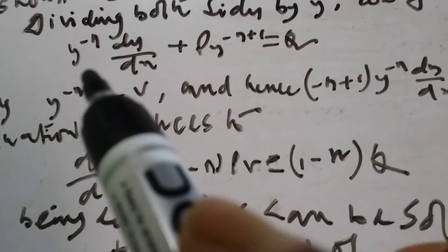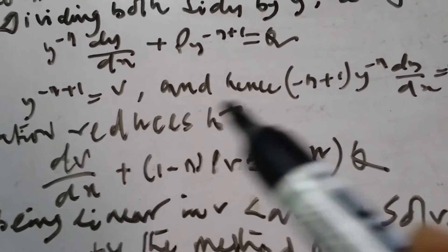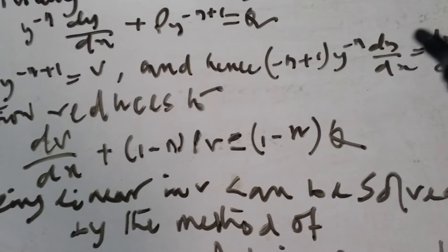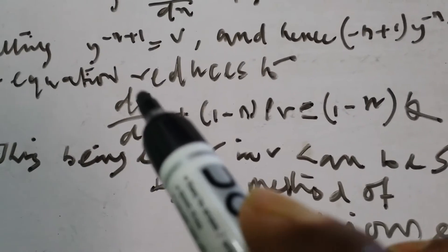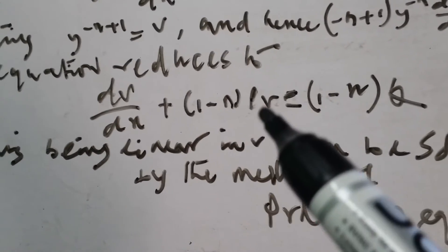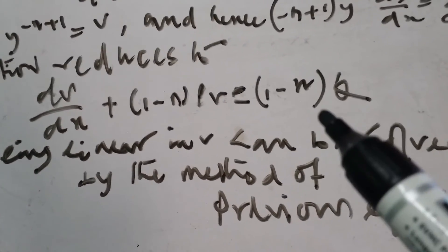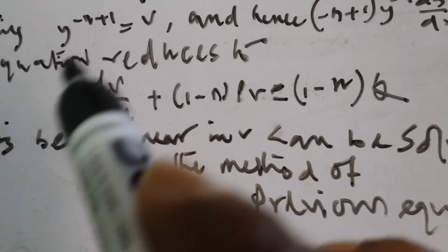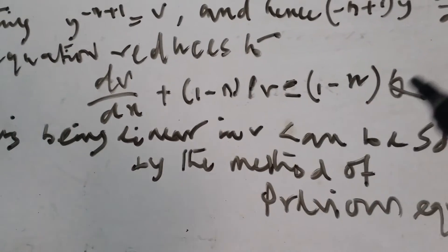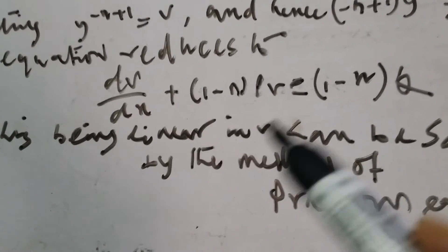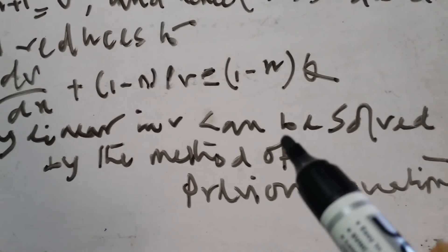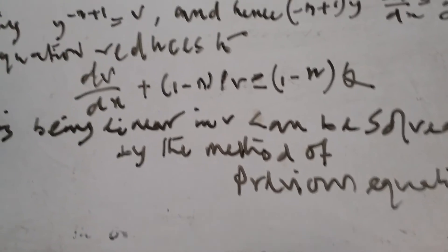If you differentiate, the power will give minus n plus 1, times y^(−n) dy/dx equals dv/dx. So now the equation takes the form dv/dx plus (1−n) pv equals (1−n) q. This is of the linear form as above, and so this linear equation can be solved by the method of the previous equation.